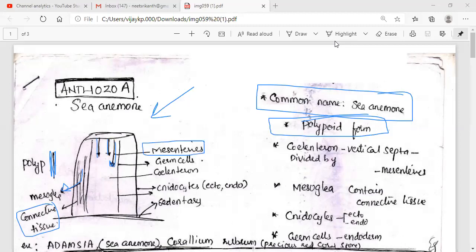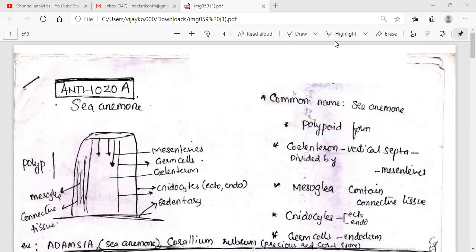Next, a point about the germ cells. The germ cells are derived from endoderm, the diagram itself showing. Coelenteron, gastrovascular cavity with mesenteries. Cnidocytes are present in both ectoderm and endoderm. They are sedentary in nature. So that means when we close our eyes, we will remember all that. If you remember the diagram, we will remember all the finer points.